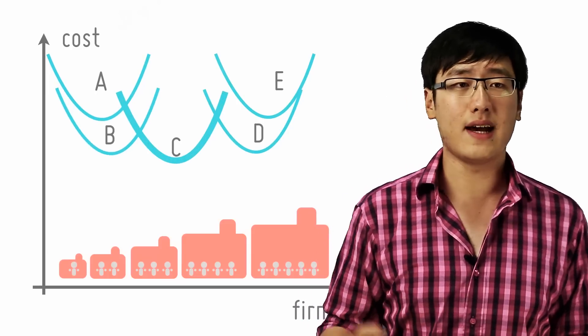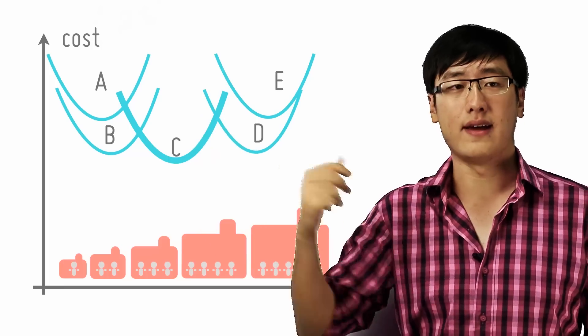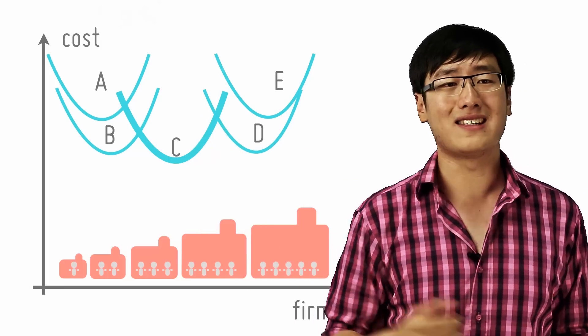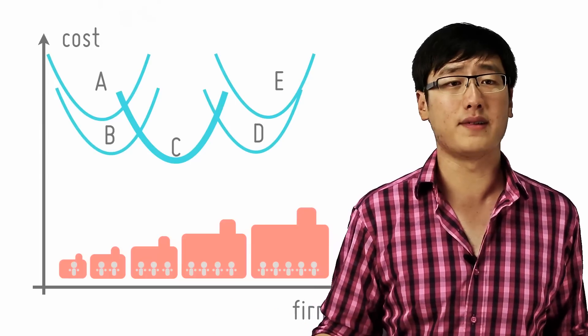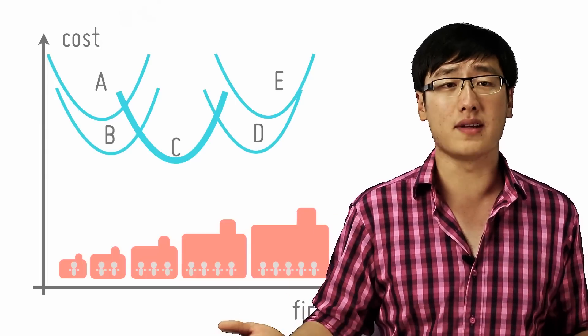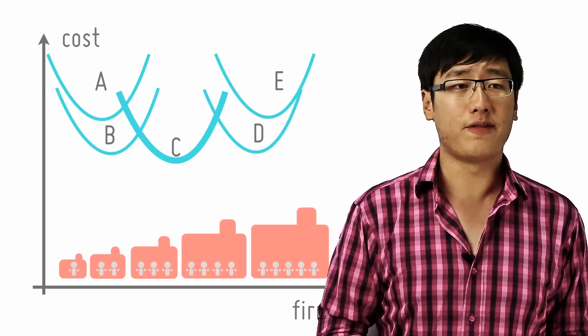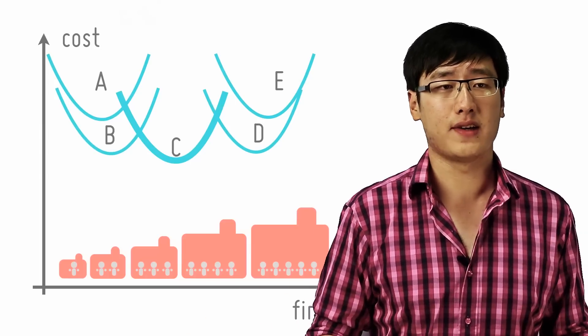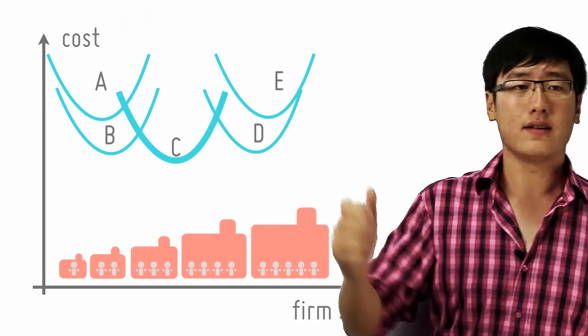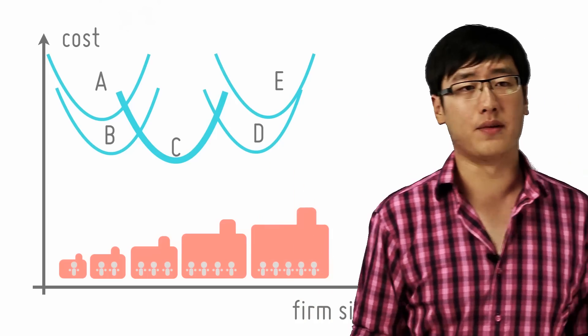B and C are lower than A, and C is lower than B, because of the effect of economies of scale. As the firm grows, it faces a lower unit cost. D and E exhibit diseconomies of scale.